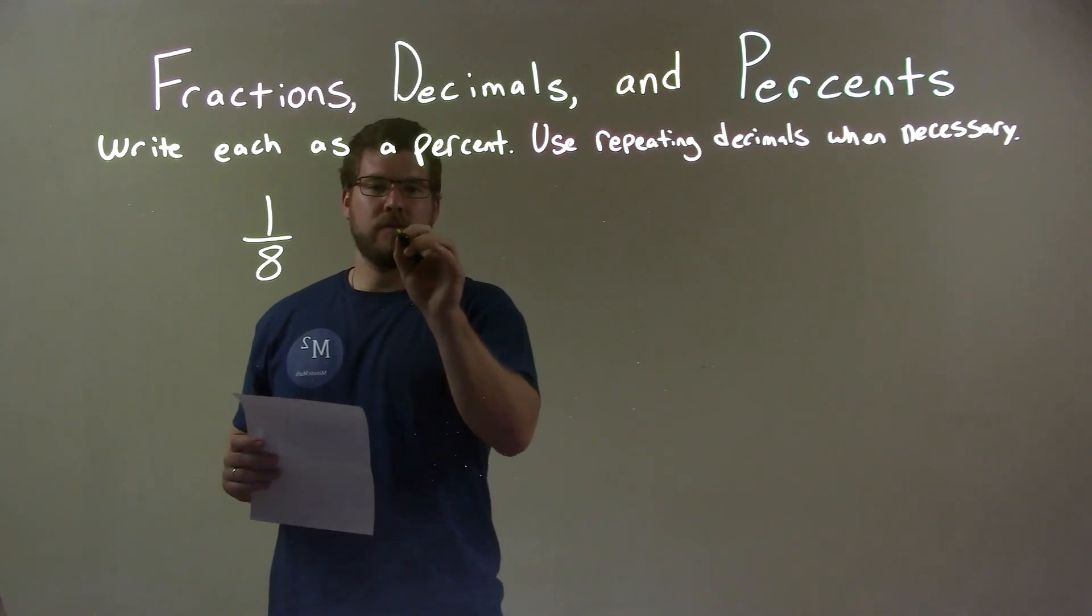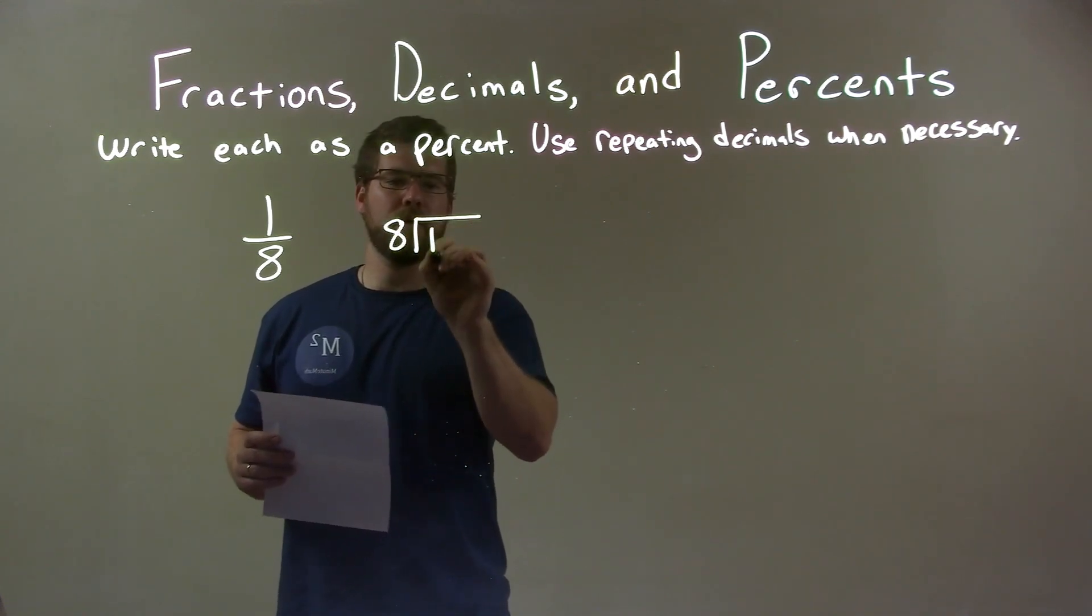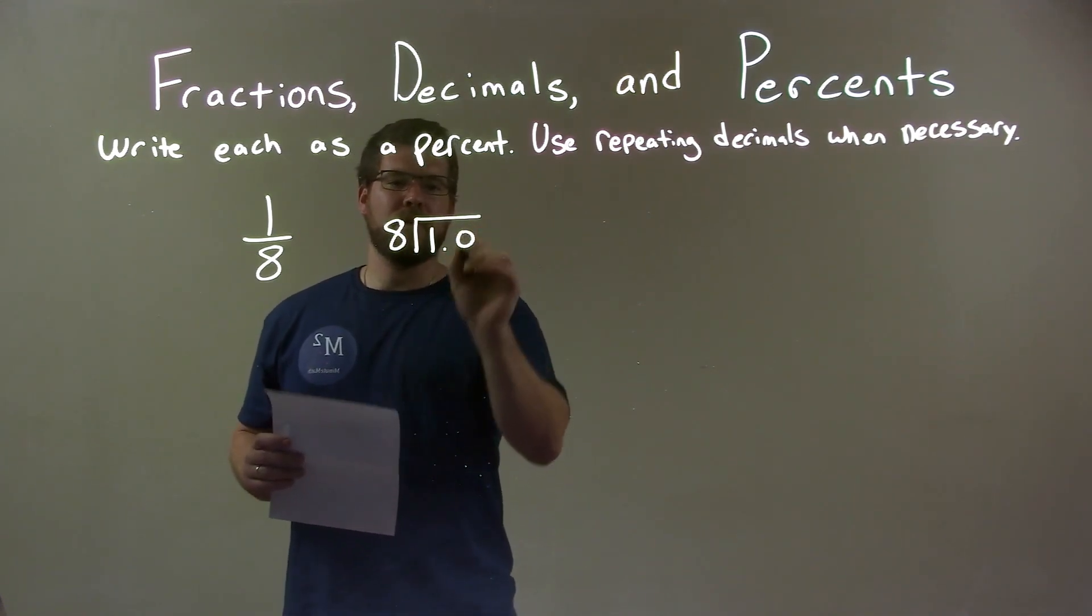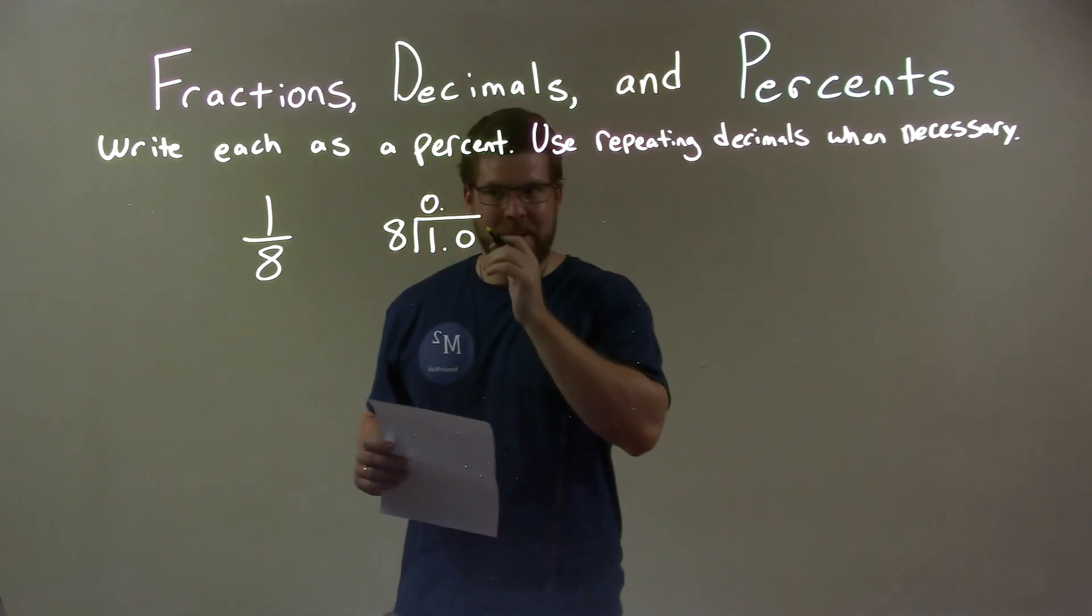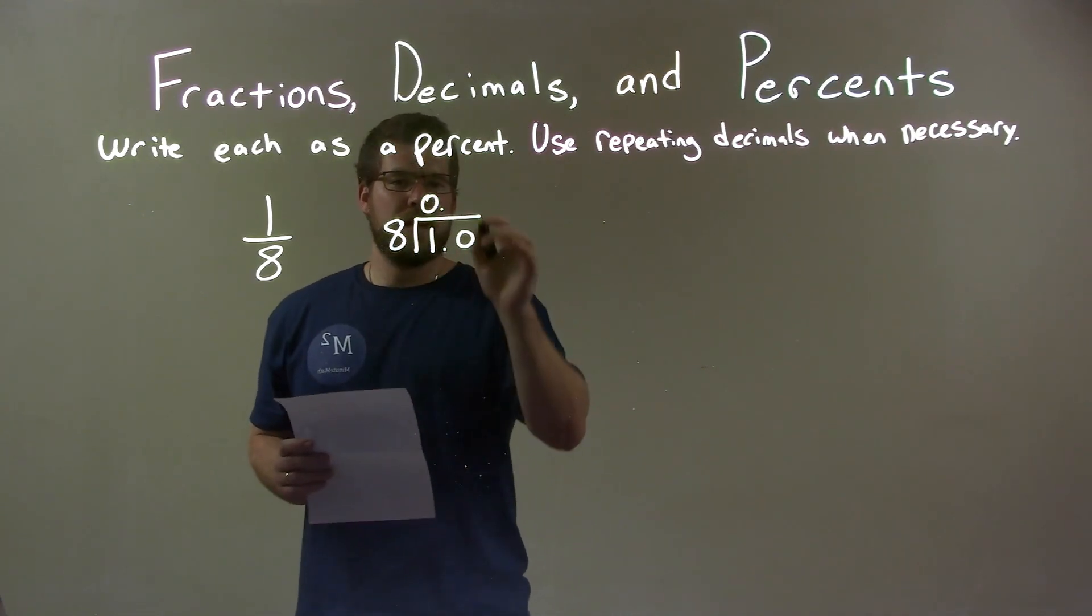One-eighth as a decimal. So we do some long division. 8 goes into 1, and we have to write 1.0 because it can't go into 1 evenly or nicely. So 8 goes into 10 one time.